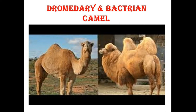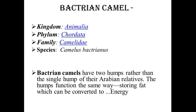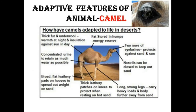A comparison of the Arabian Dromedary and Bactrian camel is shown here. The Bactrian camel is classified under Kingdom Animalia, Phylum Chordata, Family Camelidae, genus and species Camelus bactrianus. Bactrian camels have two humps rather than the single hump of their Arabian relatives; the hump functions by storing fat, which can be converted to energy in an emergency. Two rows of long eyelashes protect the animal from sand and sun, and in addition, three rows of eyebrows form a barrier against sand particles entering the eyes.